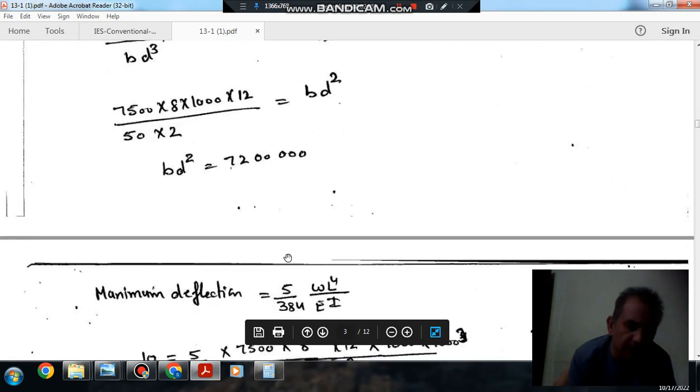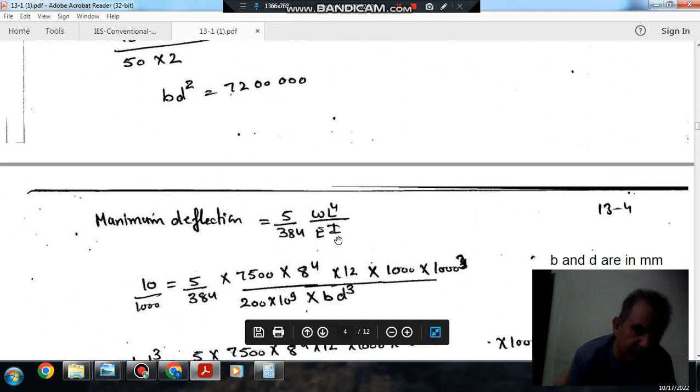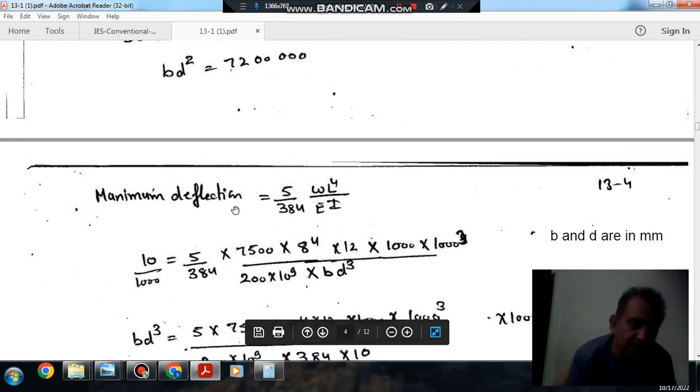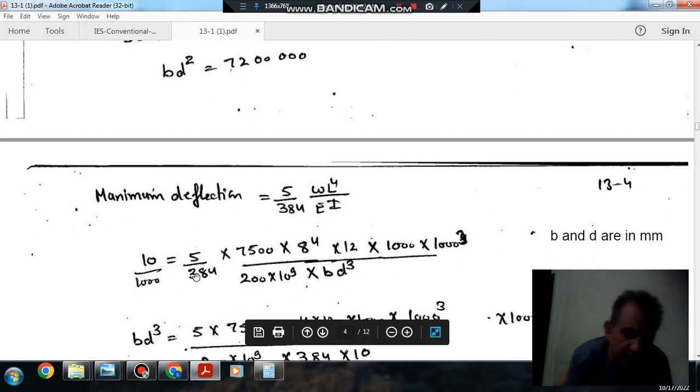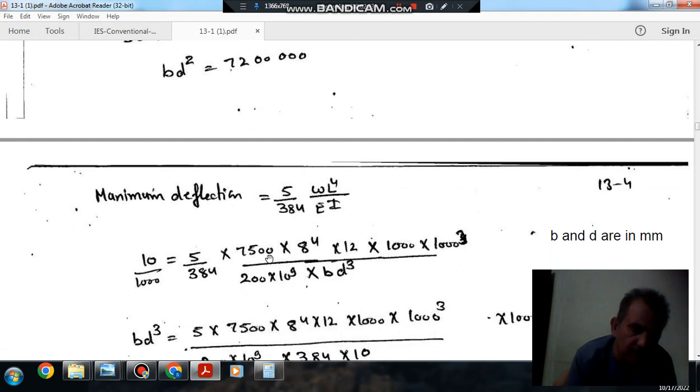And the maximum deflection is 5 by 384 WL to the 4th by EI, and maximum deflection is given as 10 mm. So converting this equation into meters, now we will take all the units in meters. So this deflection is in meters and W is 7500 UDL per meter.